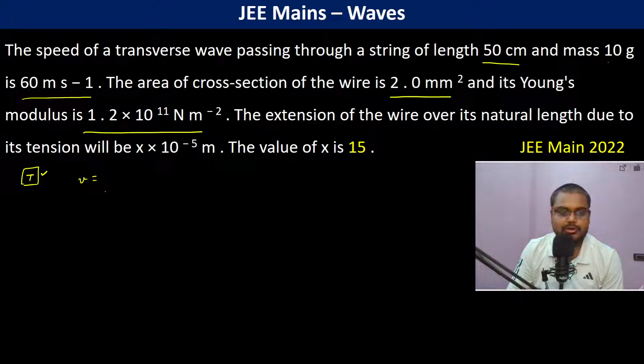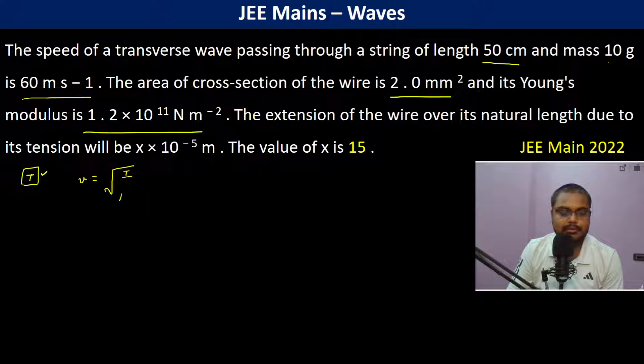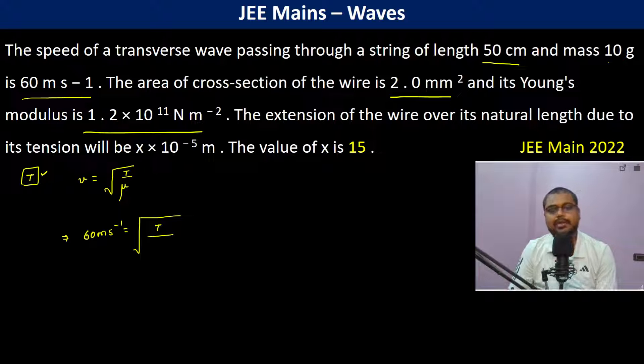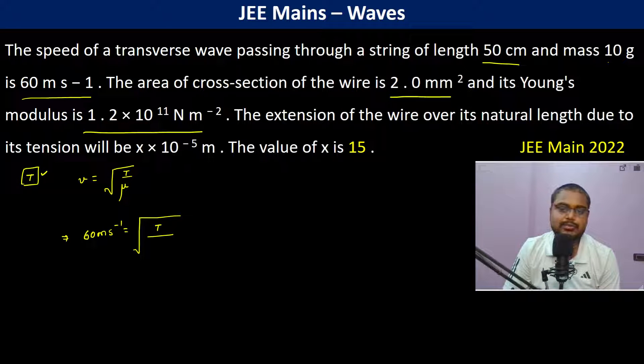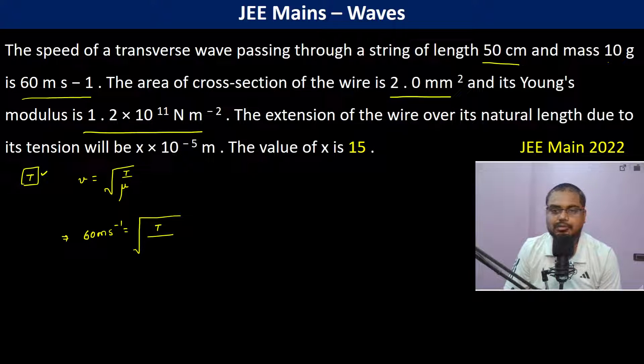Velocity is equal to root over T by mu, where mu is mass per unit length. The velocity is 60 meters per second, which is equal to root over T divided by mu. What is the mass?